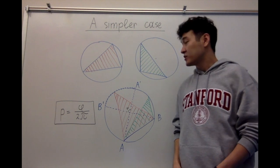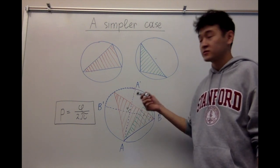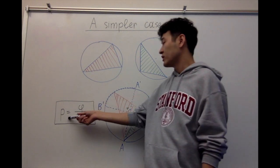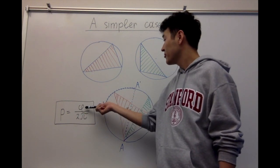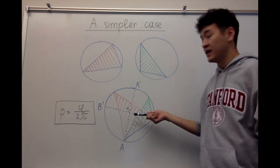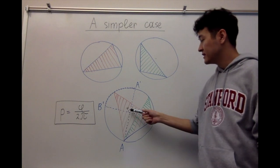The corresponding probability formula that the center lies inside the triangle is: phi over 2π, where phi is the angle between diameters AA' and BB'.